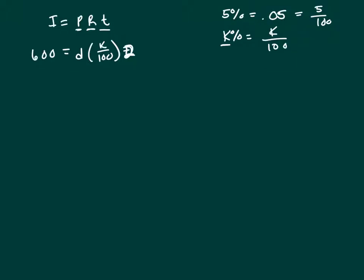I'm going to divide both sides by 2, and that gives me 300 equals D times K over 100. Multiply both sides by 100, and I get 30,000 equals DK. We're solving for K because we're going to use the same rate in the next part of this problem.